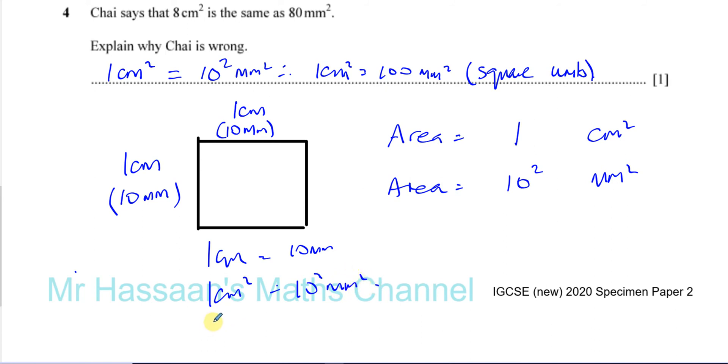And 1 cm cubed would be 10 mm cubed, because if you were to make this into like a cuboid, a cube actually, where all the lengths were 1 cm, then you'd see that the volume of this, if that's 1 cm, which is 10 mm, you'll have 1 times 1 times 1, which is 1 cm cubed.